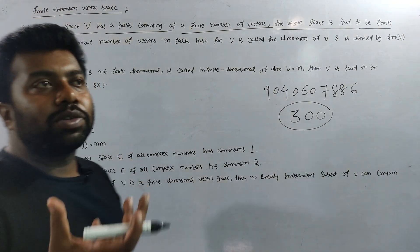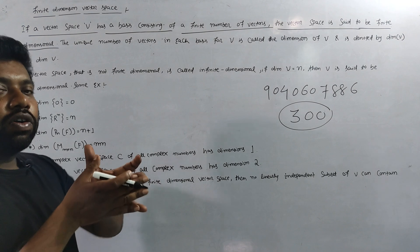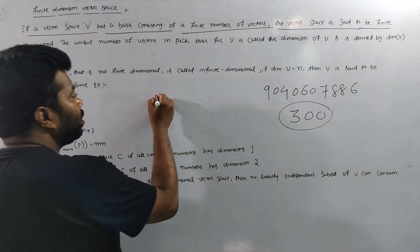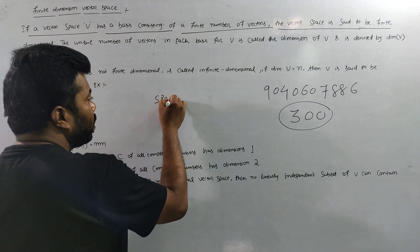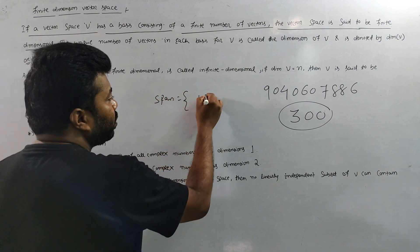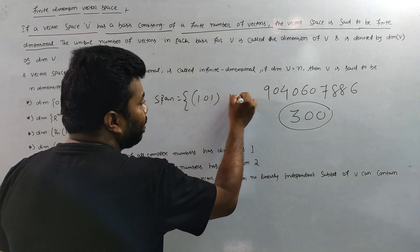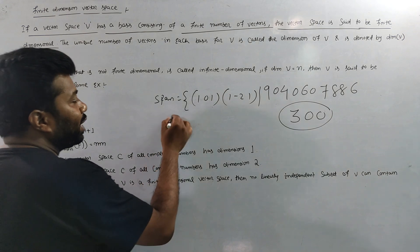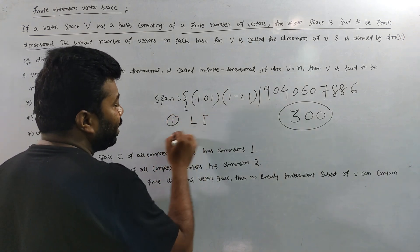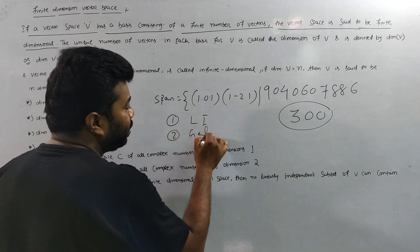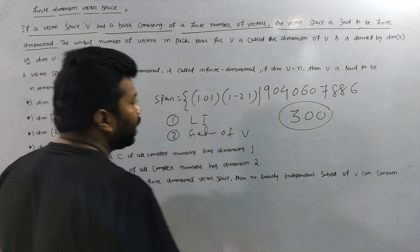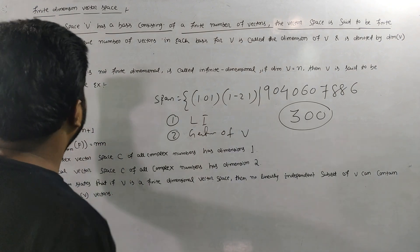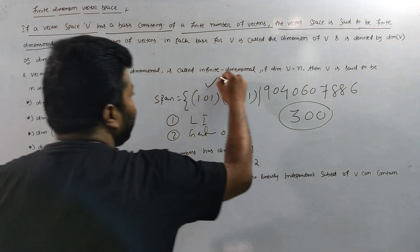What is the basis? What condition does it satisfy? If the vector space is satisfied — the first condition is linearly independent, and the second one is a generator of V — then that is your basis.